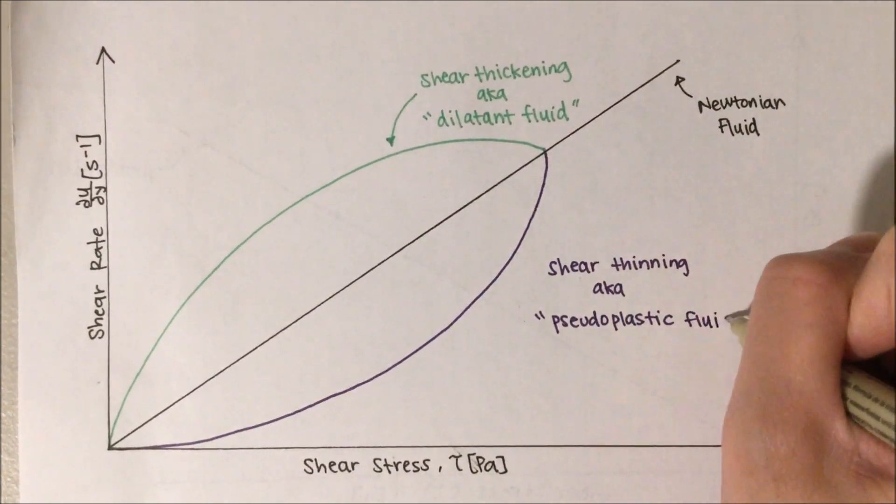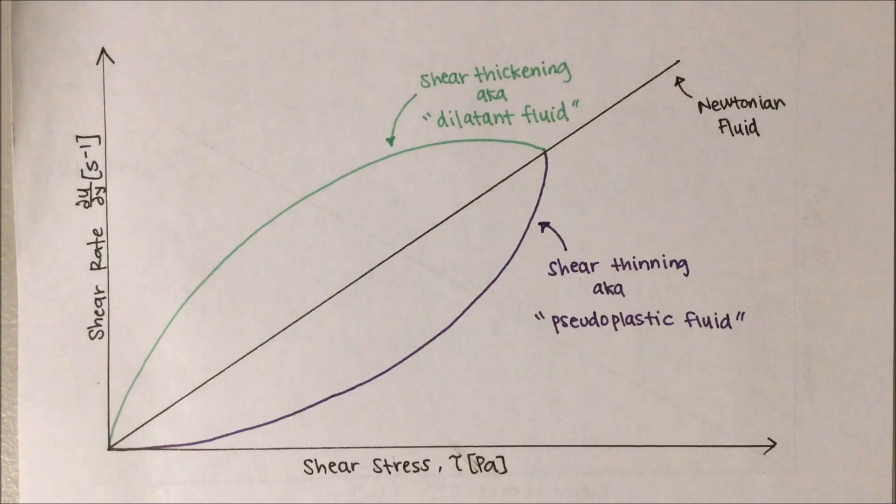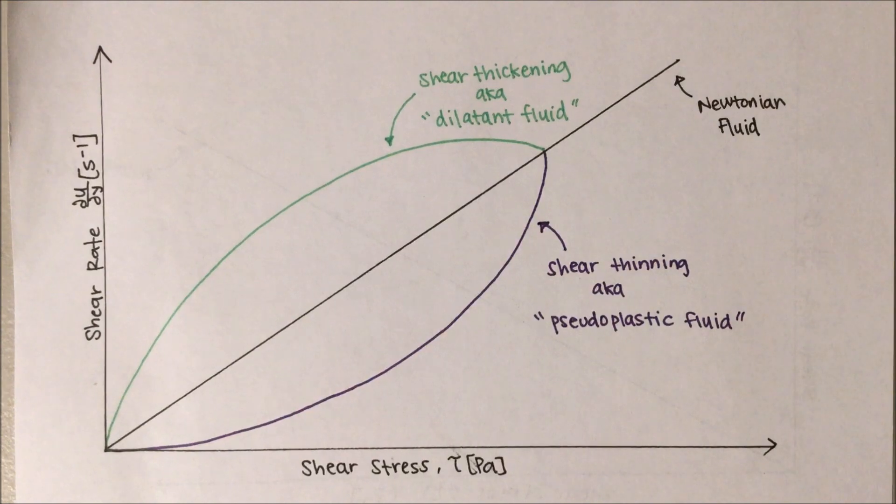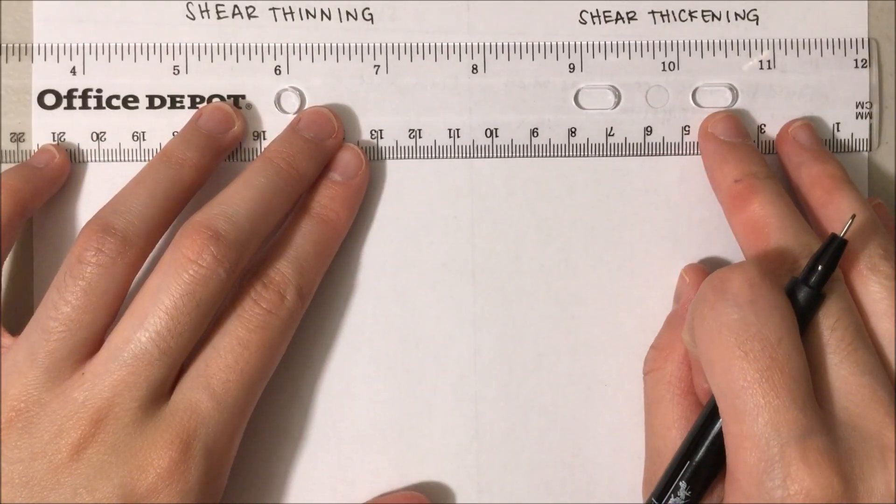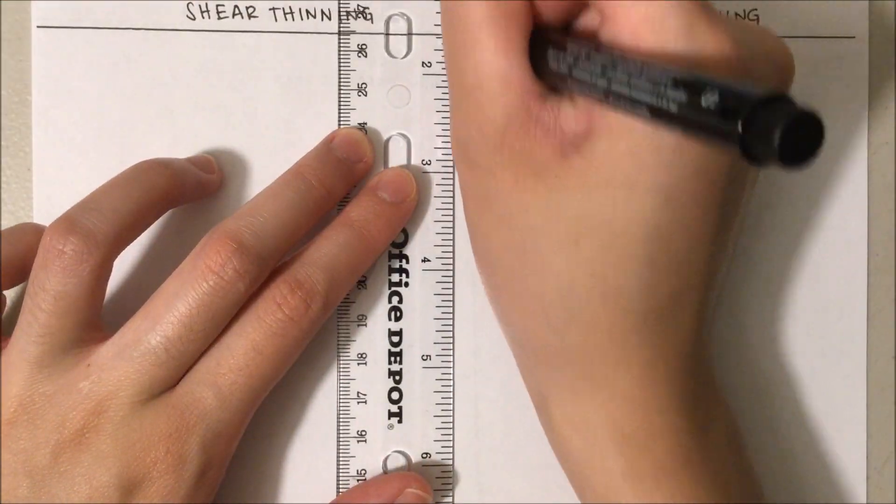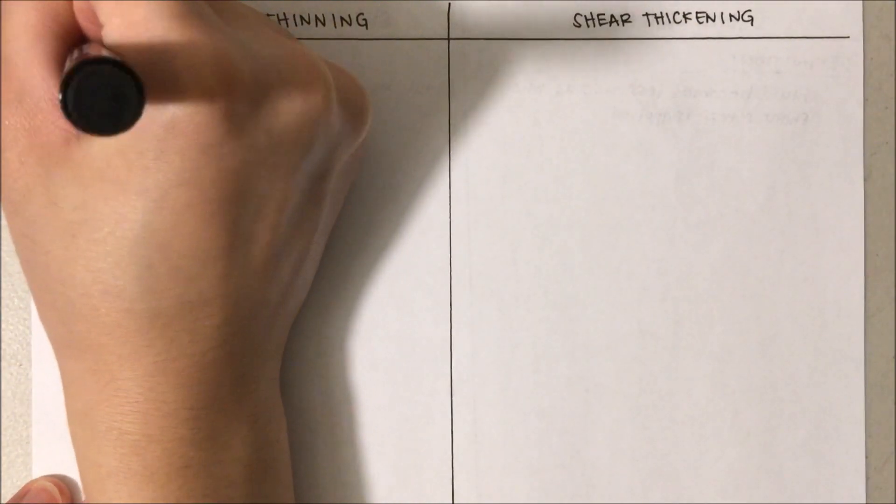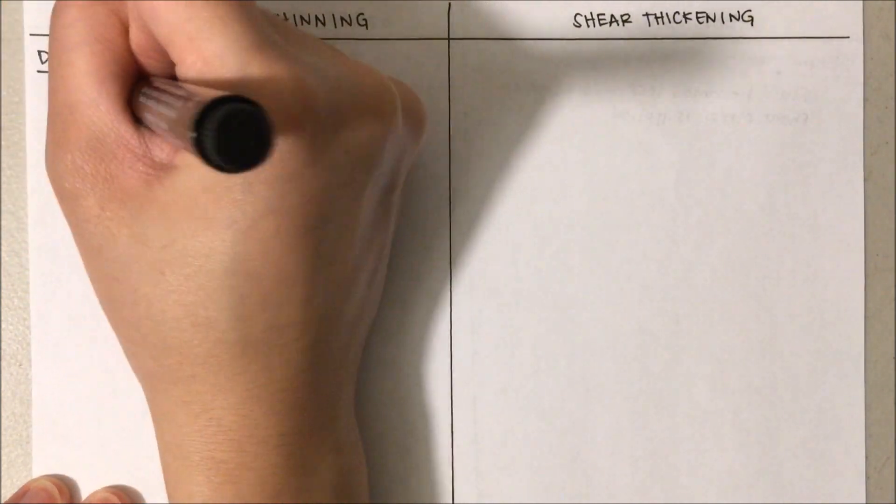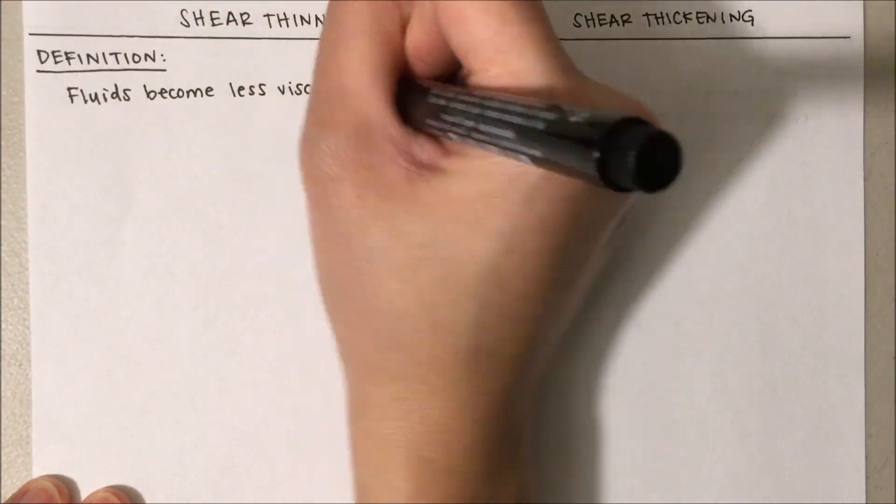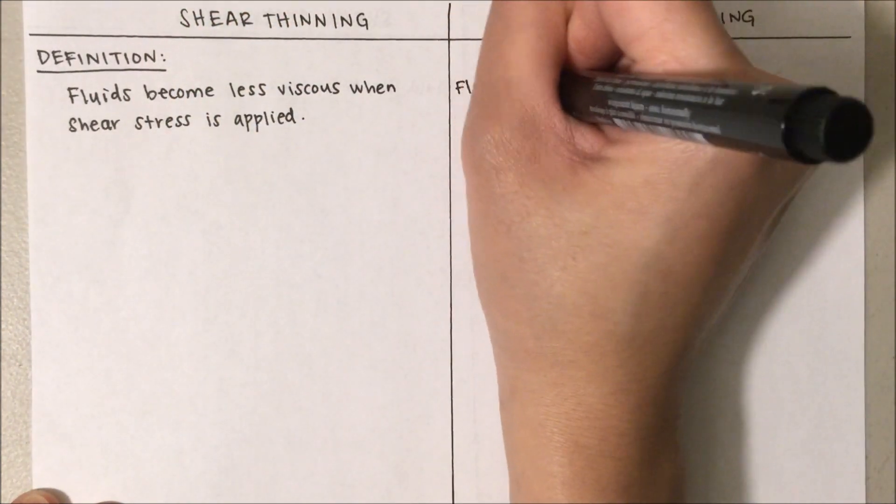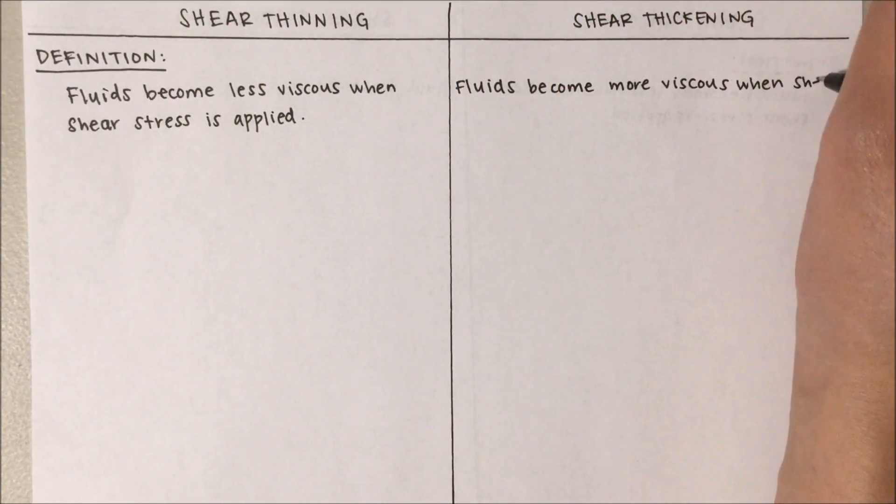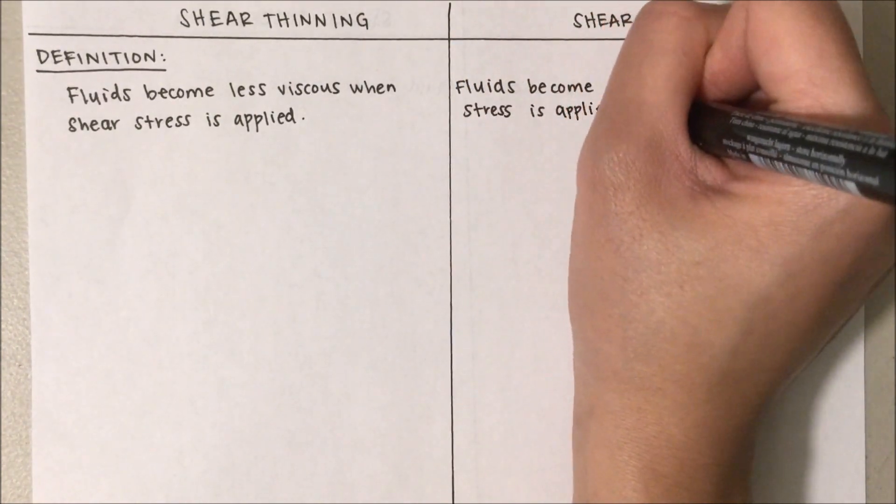Here are the typical curves for a shear thickening fluid, also known as dilatant fluid, and a shear thinning fluid, also known as pseudoplastic fluid. Now we will compare the differences between shear thinning and shear thickening fluids. Shear thinning is the behavior when a fluid becomes less viscous as shear stress is applied, while shear thickening is the behavior where a fluid becomes more viscous as shear stress is applied.